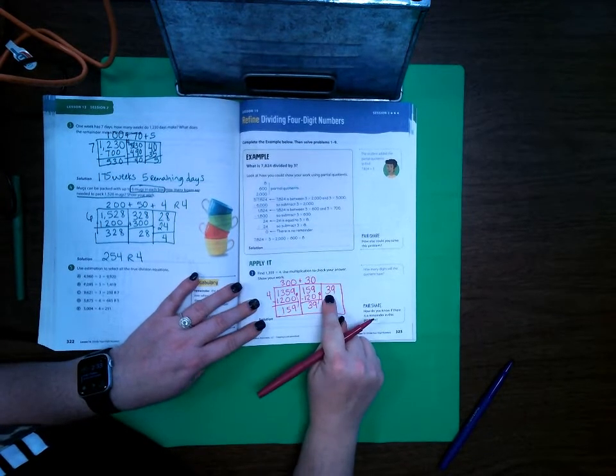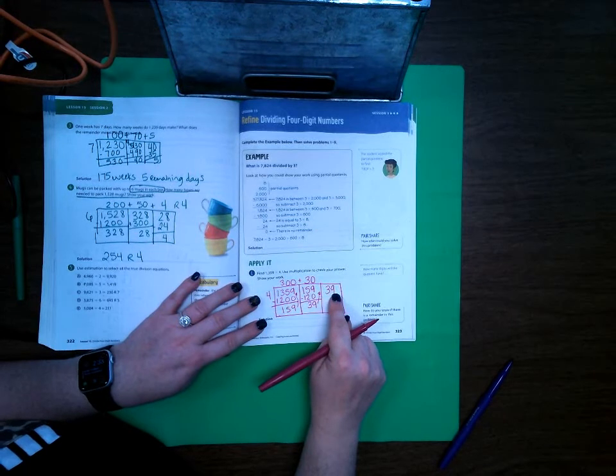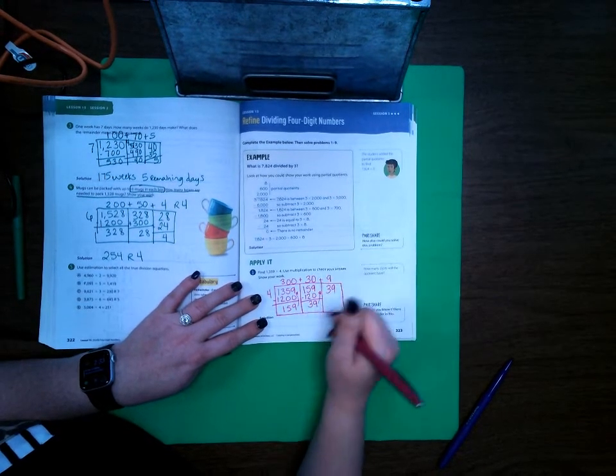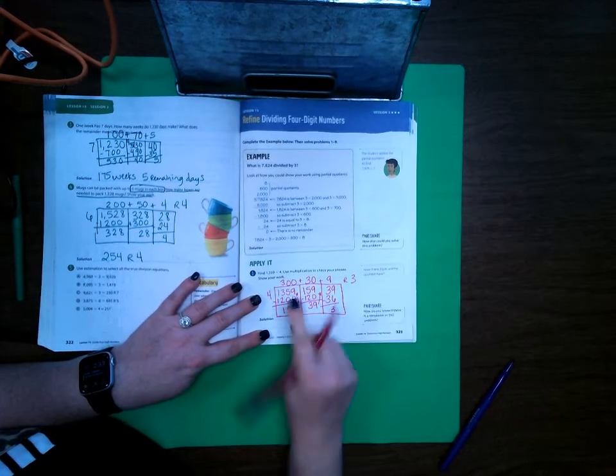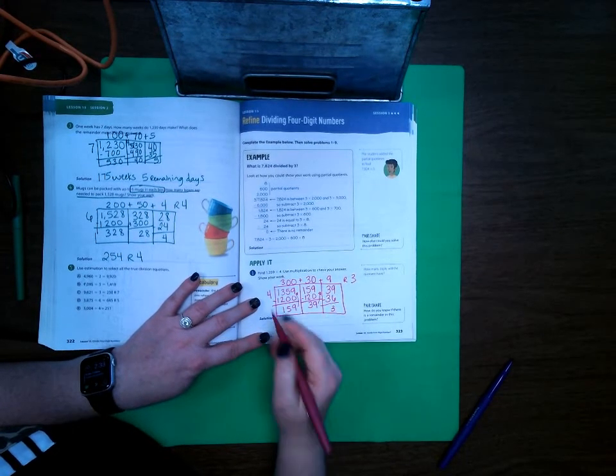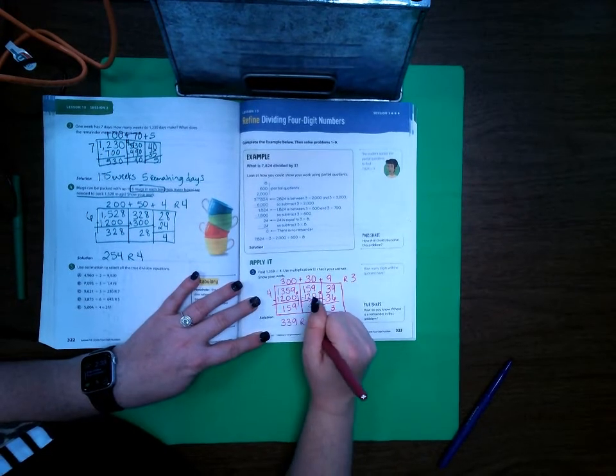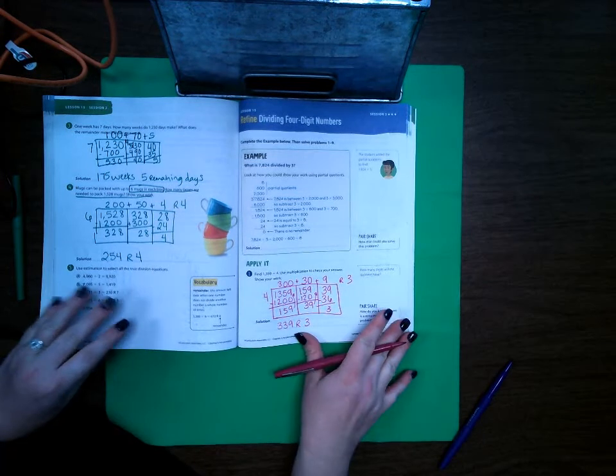4 times what is as close to 39 as we can get without going over? Well we can't do 10 because it would be 40. So 4 times 9 is 36. Subtract and we've got 3 left over. So 300 plus 30 plus 9 equals 339 remainder 3. Go ahead and turn to page 324.